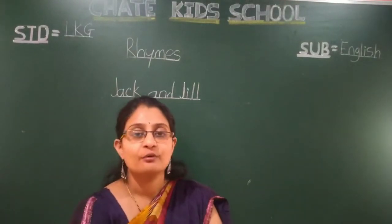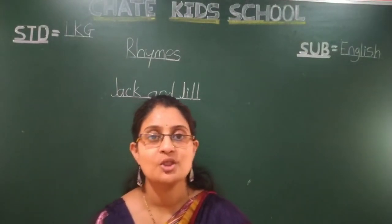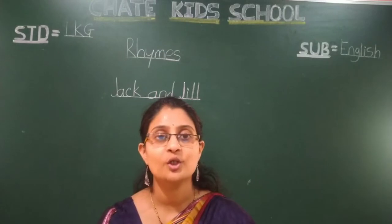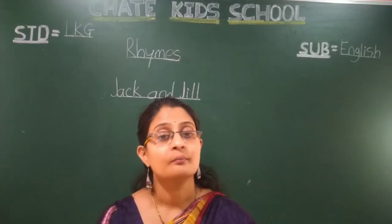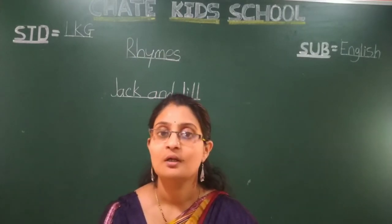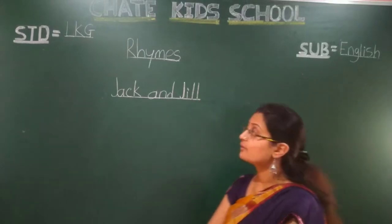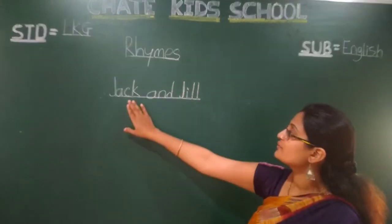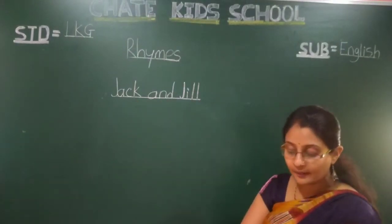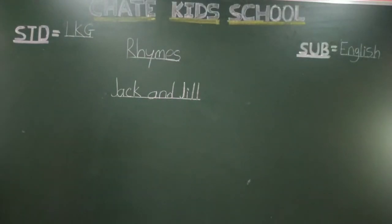Hello, today welcome to Chapter Group of Education online class. Today we are going to learn math English — English. We will learn a poem. Our poem name is 'Jack and Jill.' Take your rhyme book, thing number six.